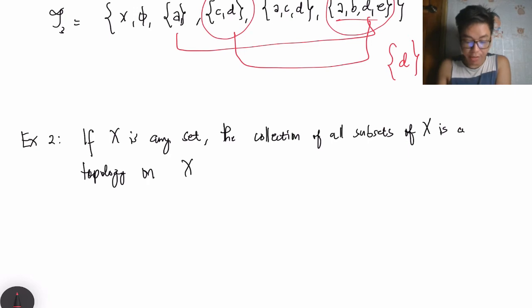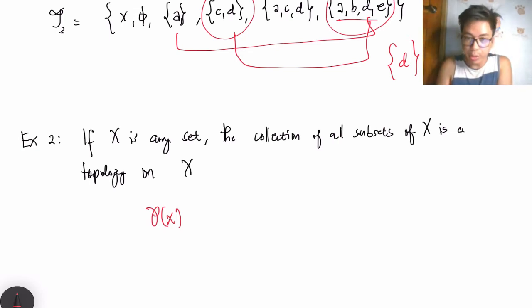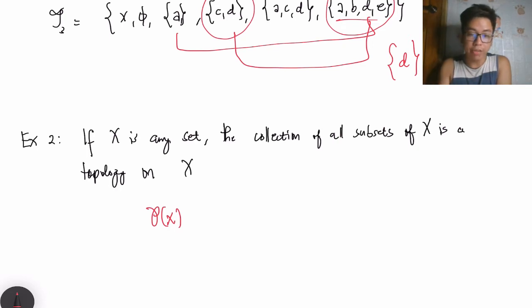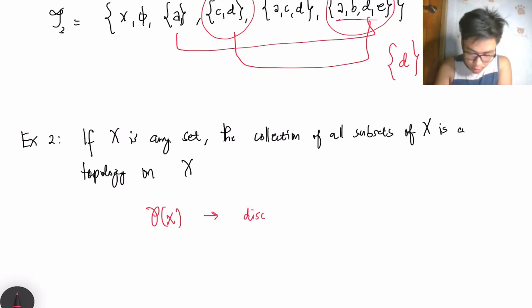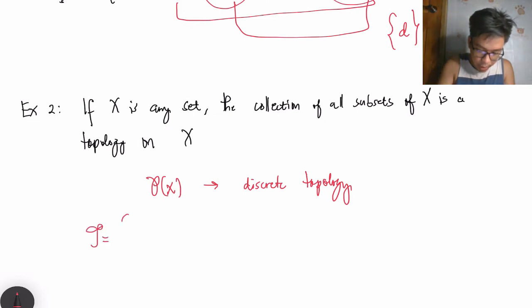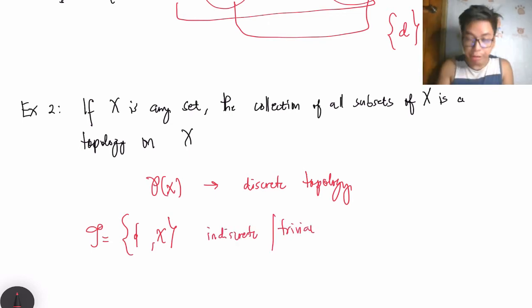If X is any set, the collection of all subsets of X — the power set of X — is a topology on X. It contains the empty set, X itself, and all possible subsets, and is closed under unions and intersections. We call this the discrete topology. On the other hand, if tau contains only the empty set and X, that is also a topology, and we call it the indiscrete topology or trivial topology.